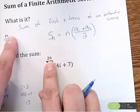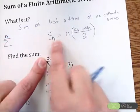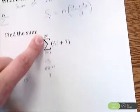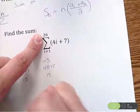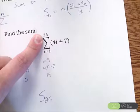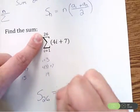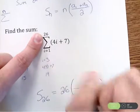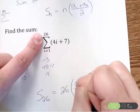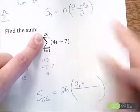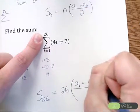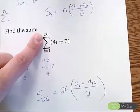So I'm going to replace, since this is n, that's 26, I'm going to replace all the n's here with 26. So this is going to look like s with a subscript 26 equals 26 parentheses a1 plus, instead of an, a26 divided by 2.